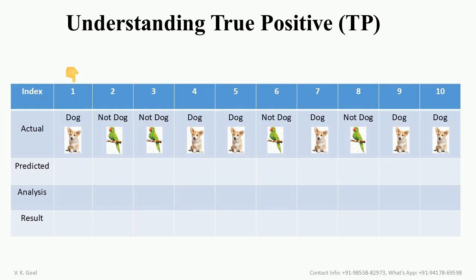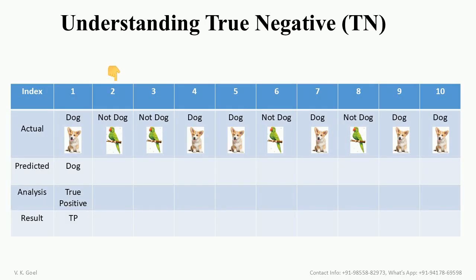Consider case number 1. In actual, it's the dog image. And say it is truly predicted as dog — it is true and positive as well. Therefore, we can call it as true positive, that is TP. Now, let's try to understand true negative, that is TN.